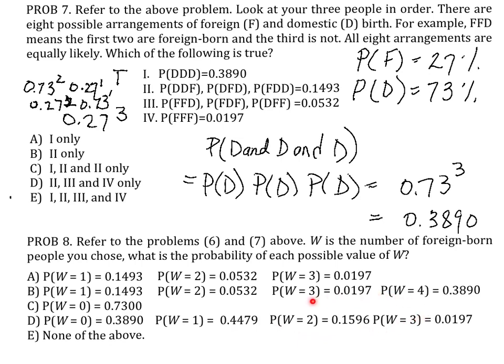For 2 foreign-born you would have to add 0.0532 to itself 3 times and that would be 0.1596. And finally for 3 foreign-born, it's just the answer we got before, 0.0197. So the answer to question 8 is D.